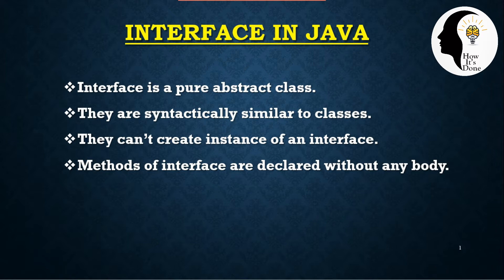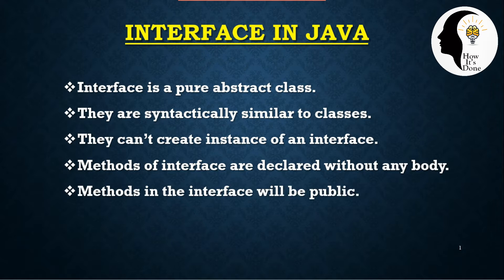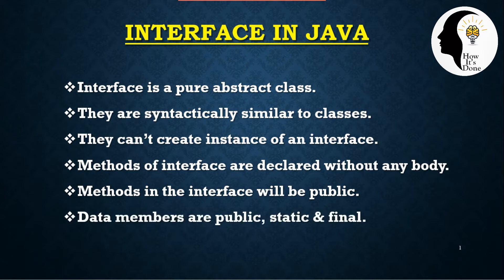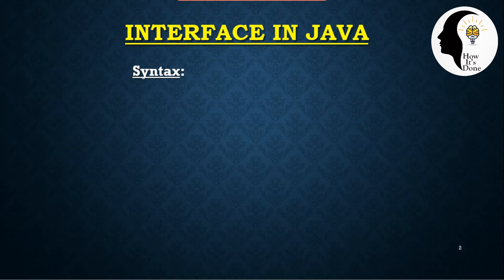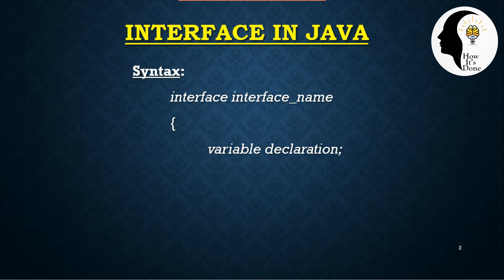The methods of the interface are declared without any body. The methods of the interface will be public. The method declaration is a pure abstract formula — that means a declaration without a body.